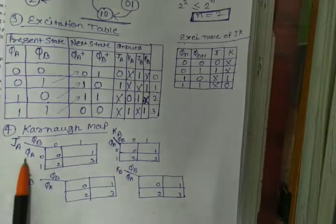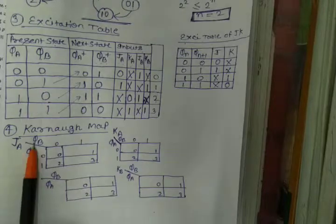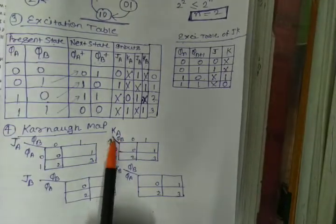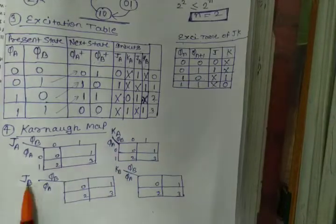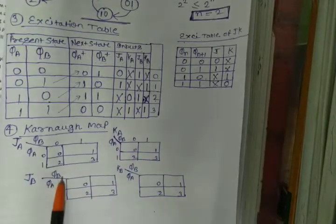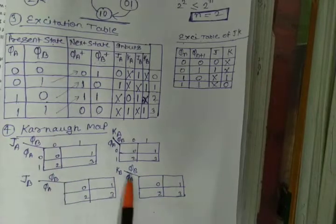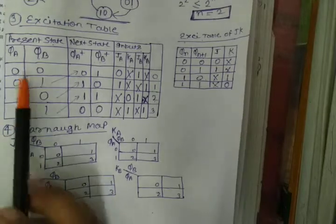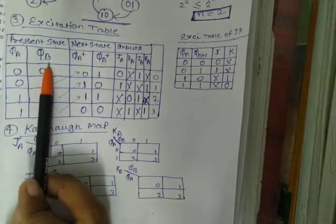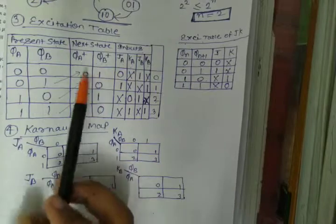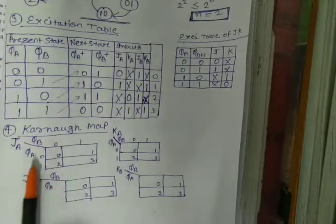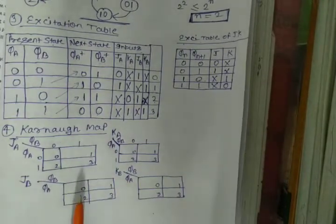For JA, the variables are QA and QB. For KA, QA and QB are the inputs. For JB, QA and QB are used, and for KB also QA and QB are used. We can only make use of present states — we cannot use next states. QA and QB are the present states used for computing JA, KA, JB, KB.